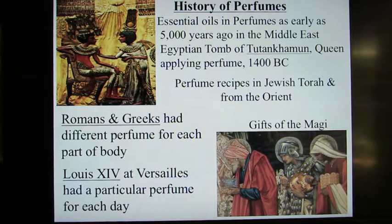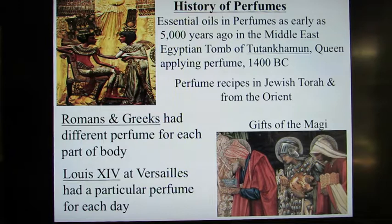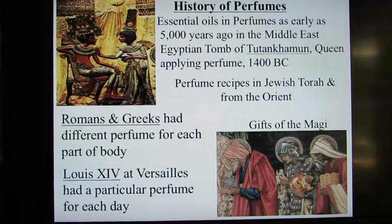We're going to be focusing on perfumes, and I have a one-slide history — you could spend a whole lecture on this. Essential oils and perfumes were noted as early as five thousand years ago in the Middle East. Shown on the upper left is a depiction of oils being applied to the young King Tutankhamen around 1400 BC. Stills and pots for essential oils have been found in the Indus Valley in India as well as in Cyprus, as many as four thousand years ago, so they've been around a long time.